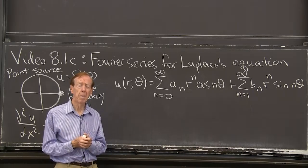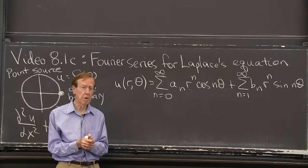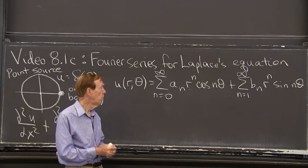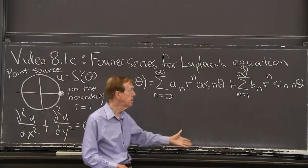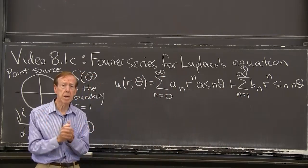And that's for every n. So we can combine. We have a linear equation. We can take combinations of solutions with coefficients a_n in the cosine and b_n in the sines. And now here's the key step.